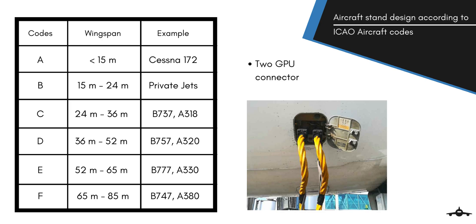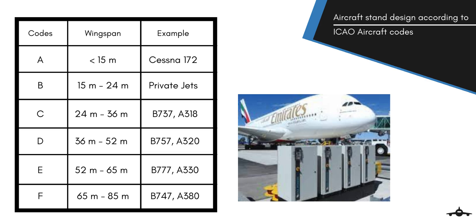Code E aircraft are wide-body aircraft and require more electrical power, so they require 2 GPU receptacles with 2 cables of 90 kVA each. Code F aircraft may require 4 cable connectors of 90 kVA each because of their extreme power requirements due to their huge size. I hope you understood the basic principle and working of ground power units. With this I conclude my lecture on GPU — see you all in the next lecture.